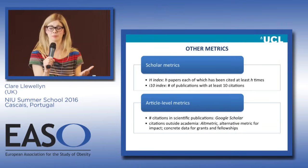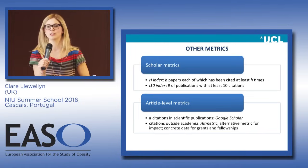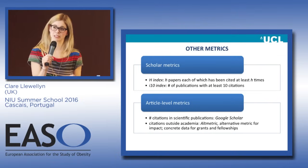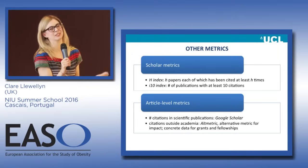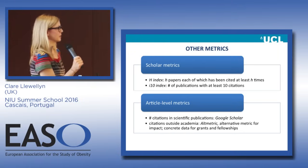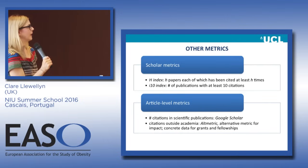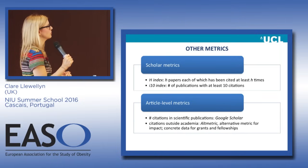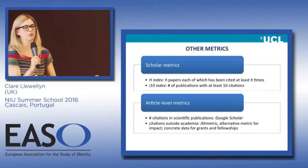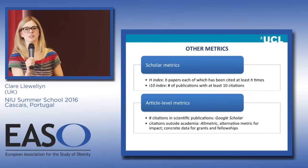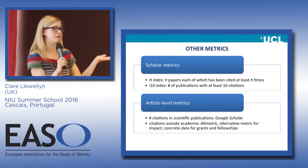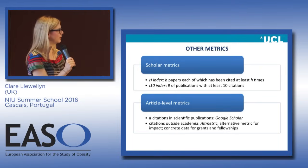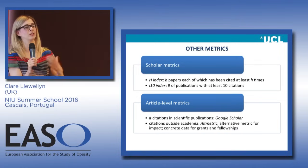The i10 index is probably a better metric for early career researchers — it's a bit fairer. It's the number of publications you've had cited at least 10 times. Obviously if you published a paper 20 years ago and it's been cited 10 times, it's probably not as impressive as a paper published last year cited 10 times. The main article-level metric is simply the number of times your paper has been cited in other scientific publications. You can easily find this on Google Scholar. I would also advise you to set up a Google Scholar account.